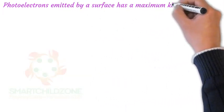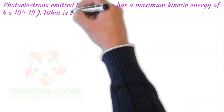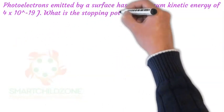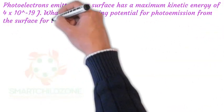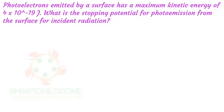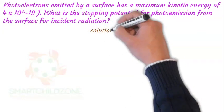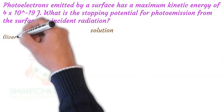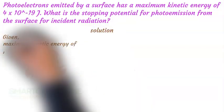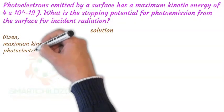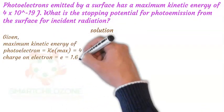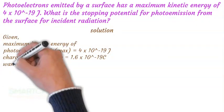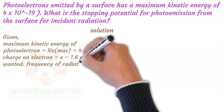Photoelectrons emitted by a surface have a maximum kinetic energy of 4 × 10⁻¹⁹ joules. What is the stopping potential for photoemission from the surface for the incident radiation? We know the maximum kinetic energy and the charge on electron, and we can use these to solve for the stopping potential.